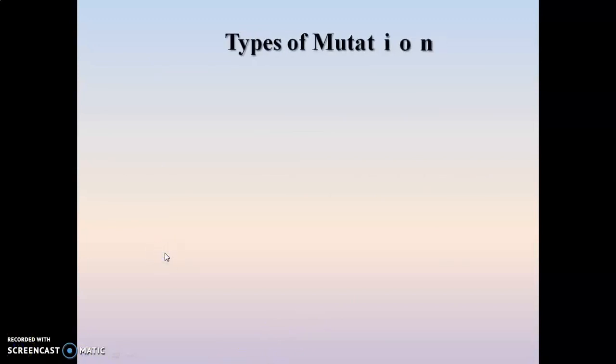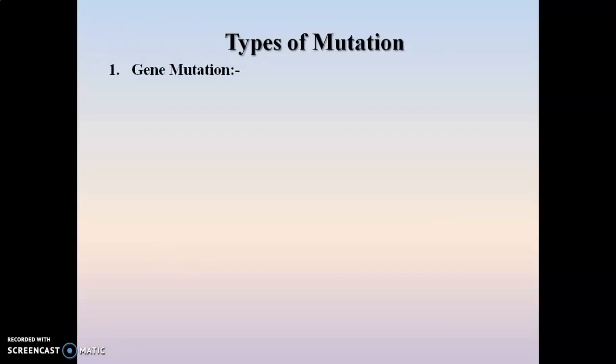Now we will start with the types of mutations. There are two types: the first is gene mutation and the second is chromosome mutation. In gene mutation, there occur changes in the structure of the gene, which is responsible for causing the gene mutation. Gene mutation is further of two types.